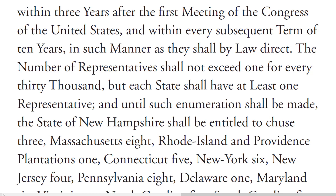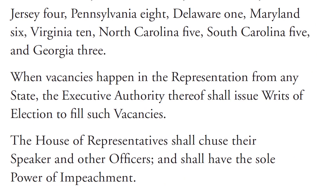The number of representatives shall not exceed one for every 30,000, but each state shall have at least one representative, and until such enumeration shall be made, the state of New Hampshire shall be entitled to choose three, Massachusetts 8, Rhode Island and Providence Plantations 1, Connecticut 5, New York 6, New Jersey 4, Pennsylvania 8, Delaware 1, Maryland 6, Virginia 10, North Carolina 5, South Carolina 5, and Georgia 3.